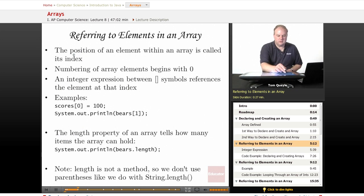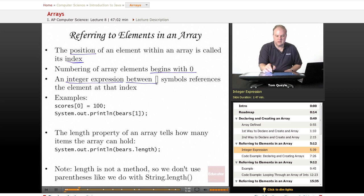The position of an element within the array is called its index. And as I previously mentioned, numbering of array elements begins with 0. So the first item in the array is actually position 0. And if I have 10 items in the array, the positions will be numbered 0 through 9. To refer to a specific element in an array, I need an integer expression between the square bracket symbols, and that gives me the reference to the element at that index.